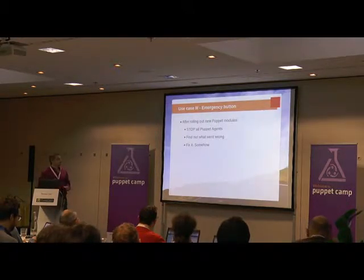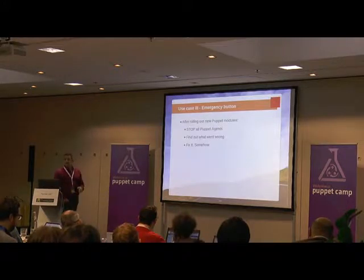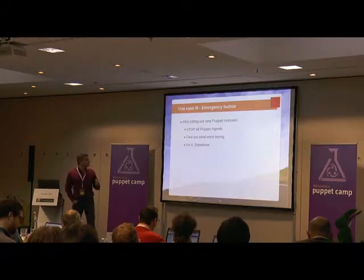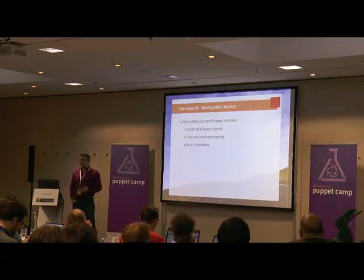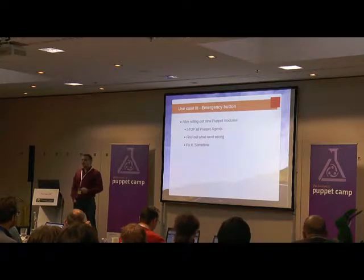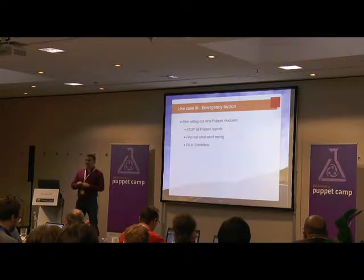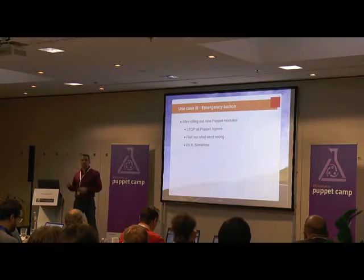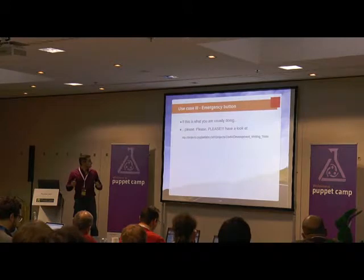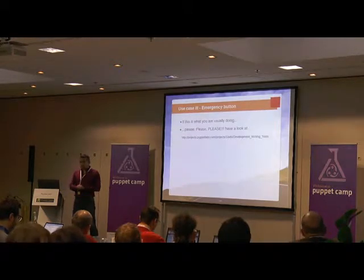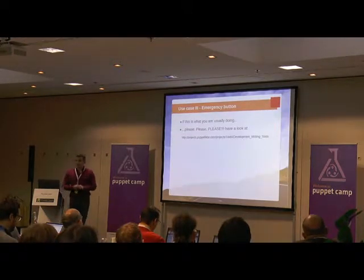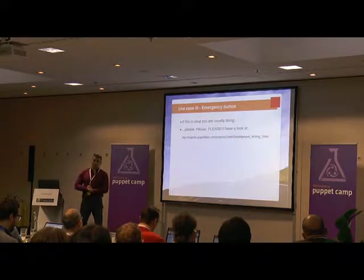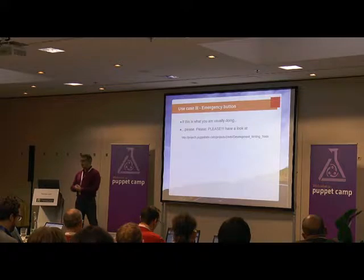That leads me to the next use case: the emergency button. This is what even our operations guys are doing occasionally. You roll out a new Puppet module, something goes wrong, and you immediately stop the Puppet agents and find out what went wrong. You have no time to write new modules, so you use mCollective to fix it live. But if this is what you are always doing after rolling out modules, then something is going wrong — you should test your modules.